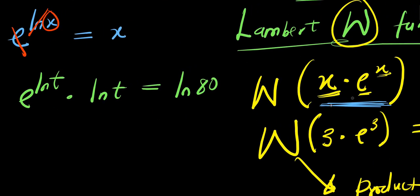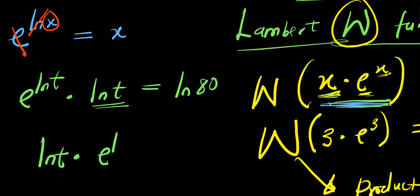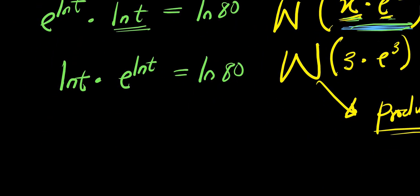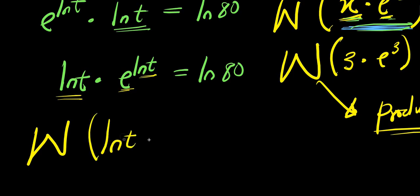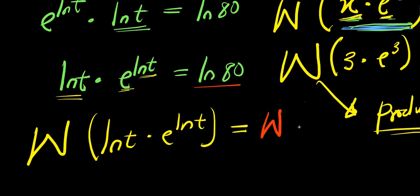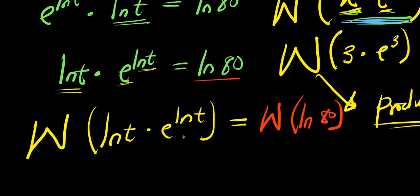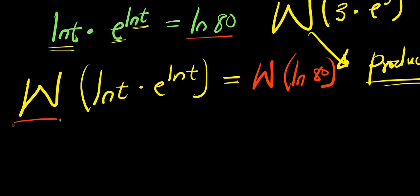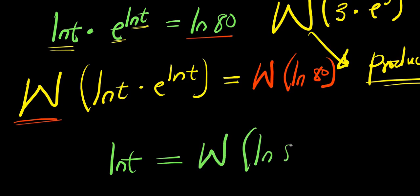Now, if you observe this expression, the x comes before e to the power of x, so we need to rearrange: ln(t) has to come before e to the power of ln(t), and this equals ln(80). Now, we apply the Lambert W function to both sides — the Lambert W function of ln(t) times e to the power of ln(t) — and we also apply it on the right side: the Lambert W function of ln(80). This gives us ln(t) equals the Lambert W function of ln(80).